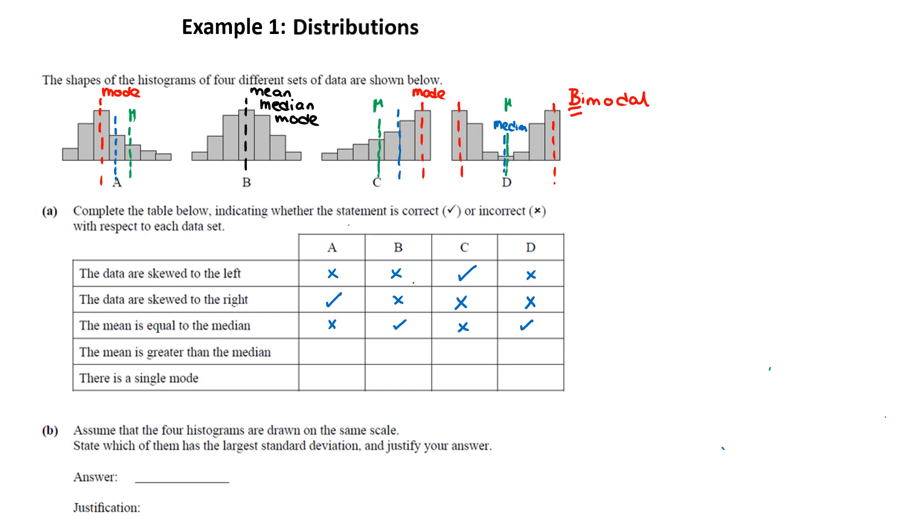Where is the mean greater than the median? So we want the green line to the right of the blue line. And that only happens in one. And that is in A. And where has a single mode? Well, all three have a single mode. The only one that doesn't have a single mode is D.